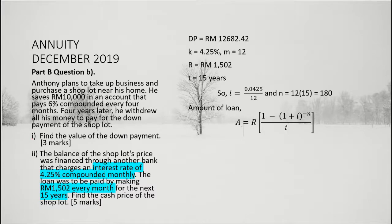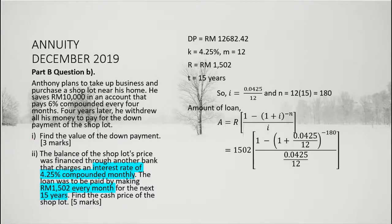So we have A equal to R multiplied by 1 minus (1 plus i) to the power of minus n, divided by i. Next, we substitute the value of R with 1,502, i with 0.0425 divided by 12, and n with 180 in the formula. Solving for A, we have the amount of loan equal to 199,660.12.